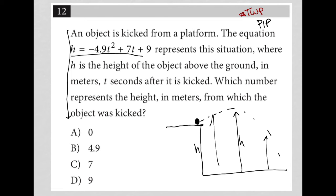Well, that would mean that we're at T equals zero. That means before we kick the object, right? What would the H value be before we kick the object? That would be using this equation, this function, negative 4.9 T squared plus 7 T plus 9. But we care about what's happening with the ball before it's kicked, so where T is zero.